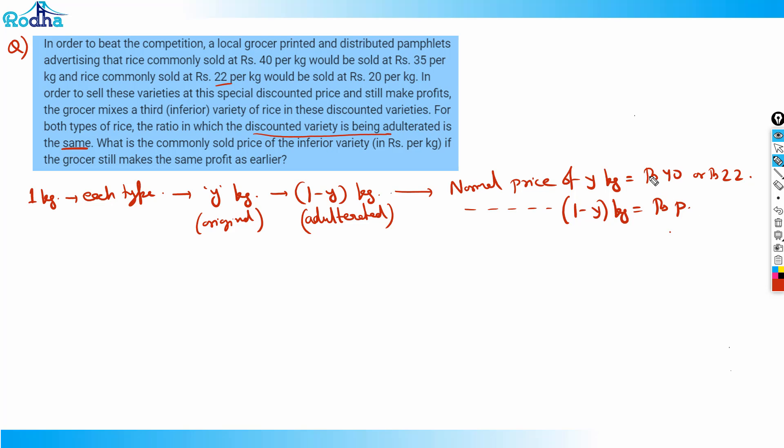After mixing, it is sold at Rs. 35 or Rs. 20. If it is the 40 variant, it is sold at Rs. 35. If it is the 22 variant, it is sold at Rs. 20.